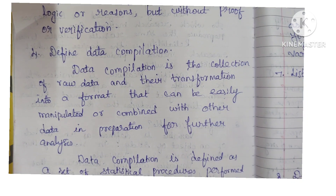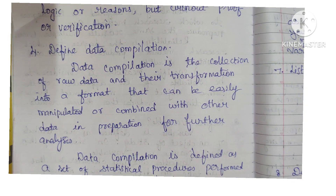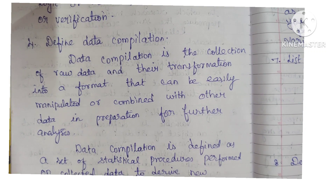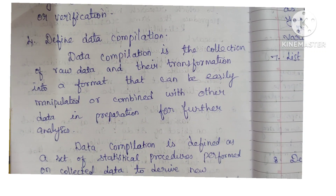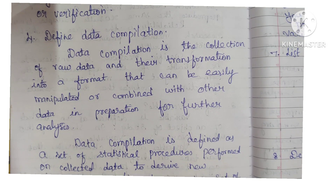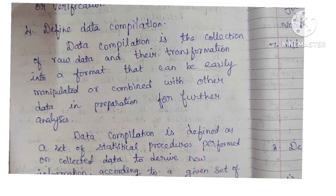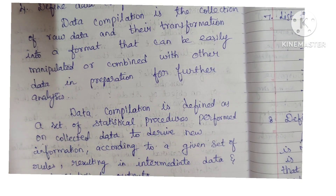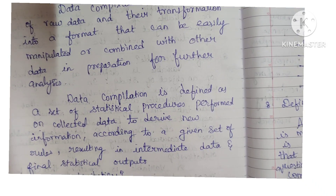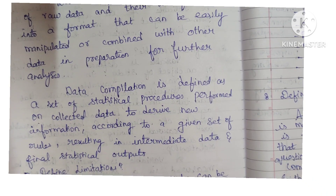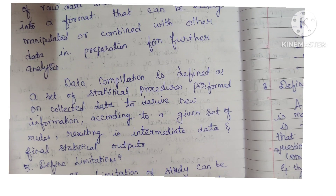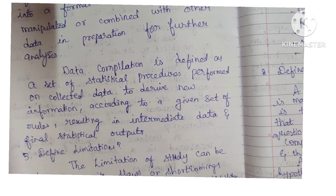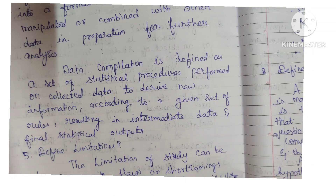Fourth question: define data compilation. Data compilation is the collection of raw data and their transformation into a format that can be easily manipulated or combined with other data in preparation for further analysis. Data compilation is also defined as a set of statistical procedures performed on collected data to derive new information according to a given set of rules, resulting in intermediate data and final statistical outputs.